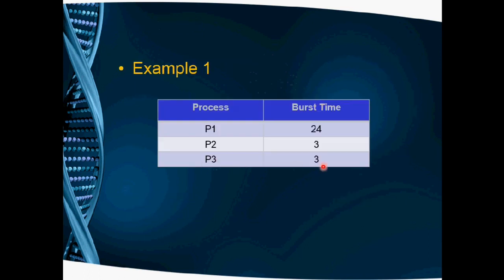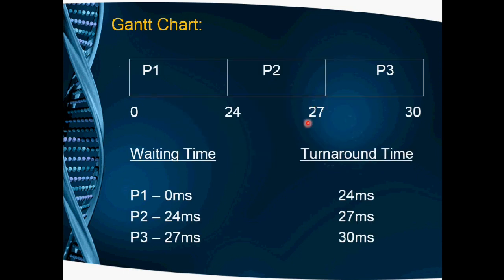The third process P3 has a burst time of 3 milliseconds. P3 starts at the 27th millisecond and completes at the 30th millisecond. In this way, we execute FCFS scheduling — First Come, First Serve — one by one in order.